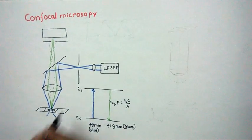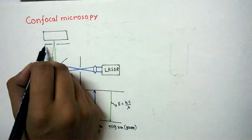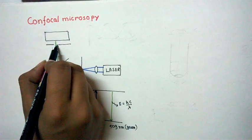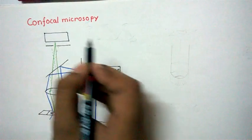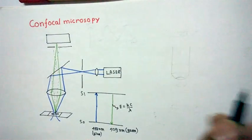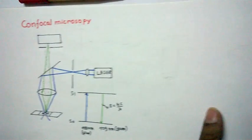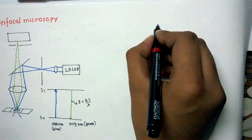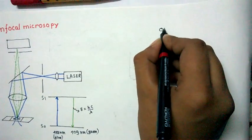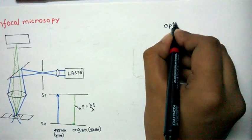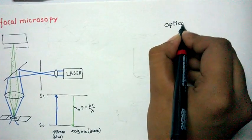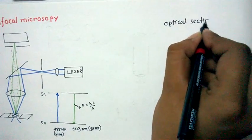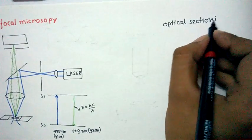The heart of the confocal is this pinhole. How the pinhole diameter is regulated we will see in a moment. Another important aspect of confocal microscopy is called optical sectioning.